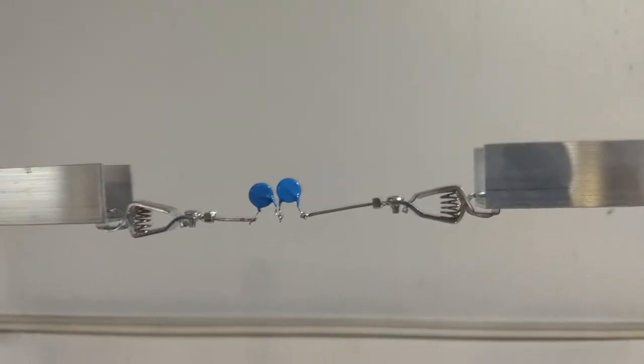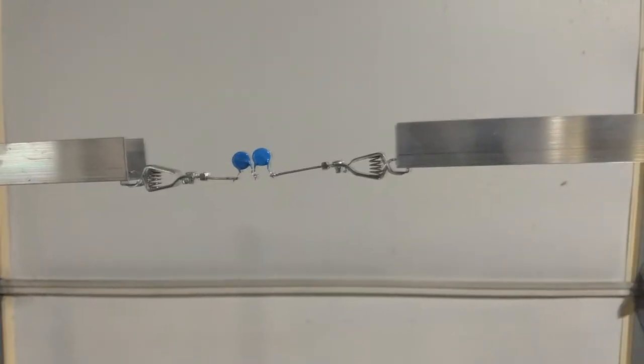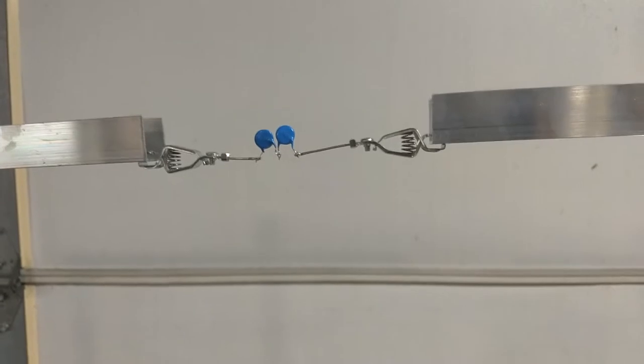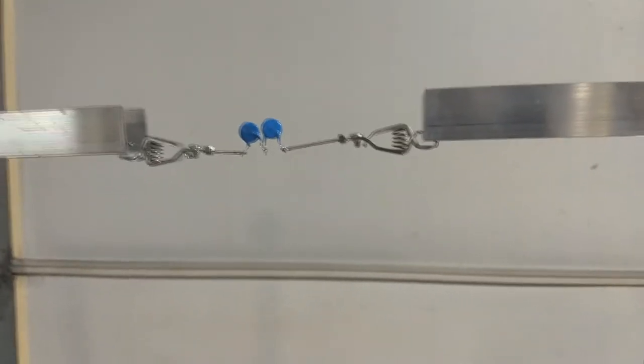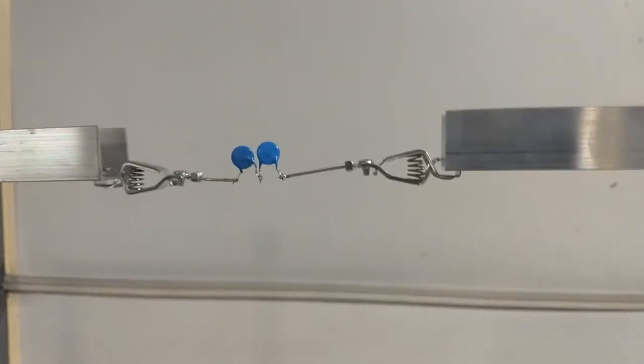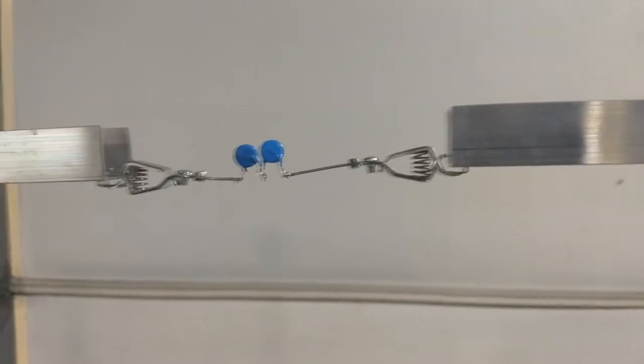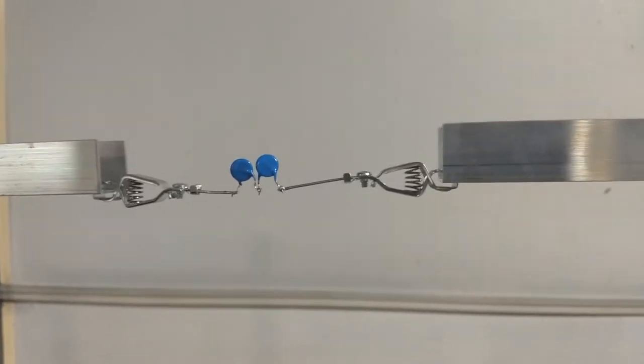This notch at the top of the loop is where the variable capacitor will go. In the meantime, you can determine the inductance of a loop by putting a known capacitor at that point and then finding the resonant frequency.